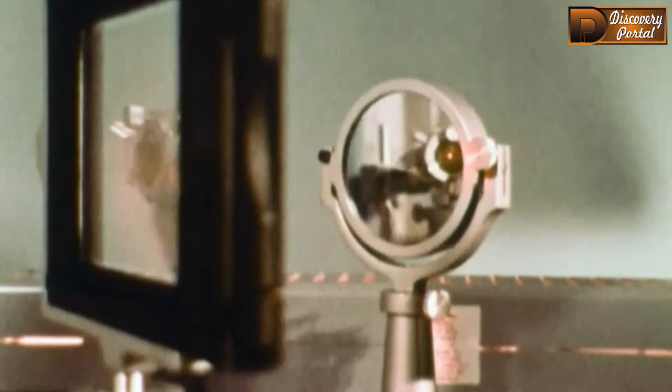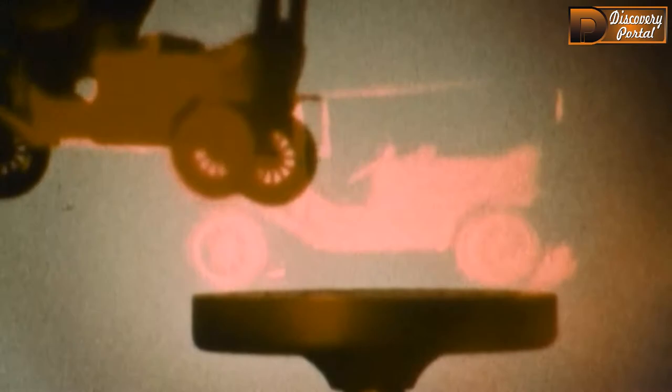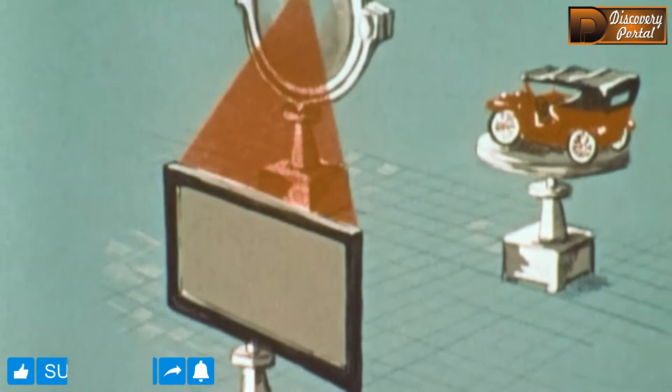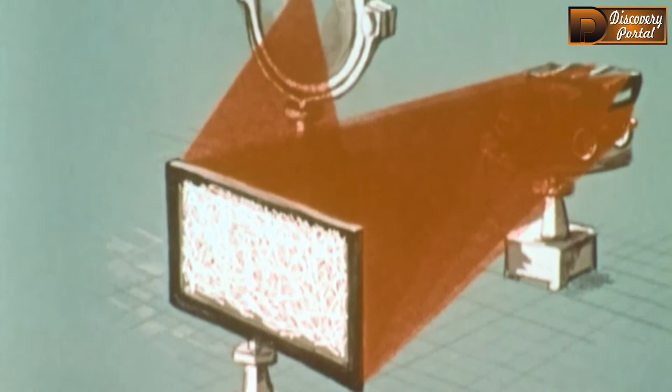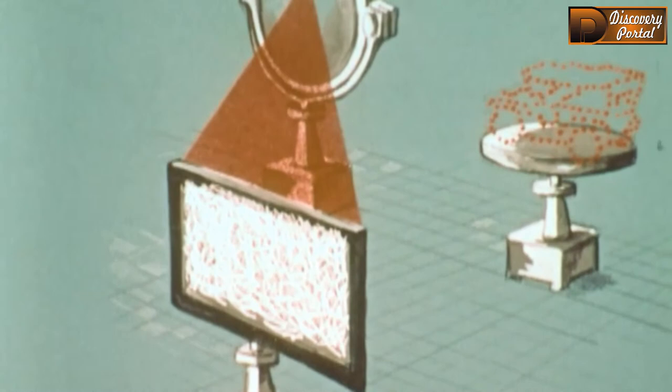Now, when the reference beam alone shines on the processed film, an identical image is reconstructed. Here is an explanation of what happened inside the emulsion. The reference beam from the left interferes with each reflected light beam from the car, creating an interference pattern. The emulsion simultaneously records all the patterns caused by all the points. Now, when the reference beam alone shines through the film, each pattern reconstructs its own object beam. And thus the whole car appears to be reconstructed.